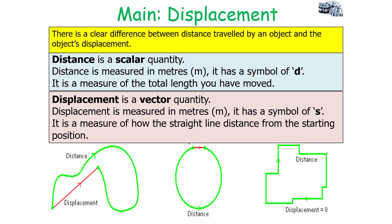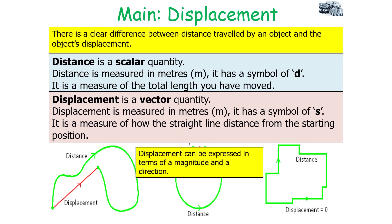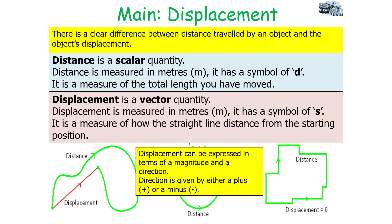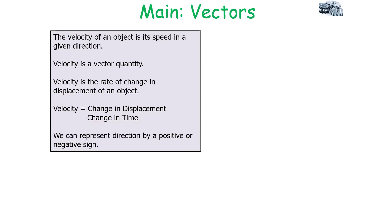Distance is given the symbol d and displacement is given the symbol s. Displacement can be expressed in terms of a magnitude and a direction, where direction can be given as either a positive or negative value. If a distance-time graph shows a line going downwards or is negative, it will actually be a displacement-time graph. The velocity of an object is its speed in a given direction.